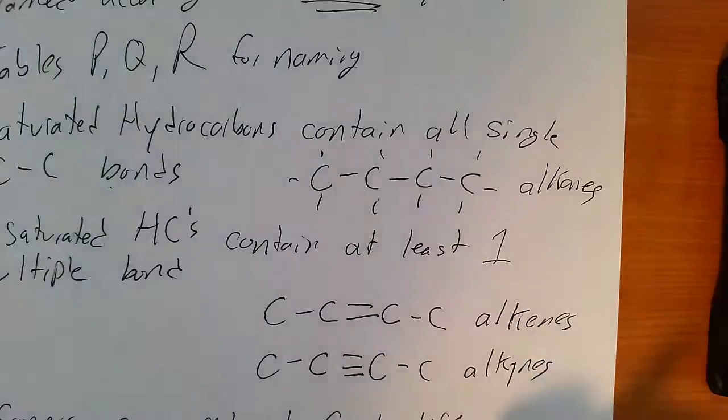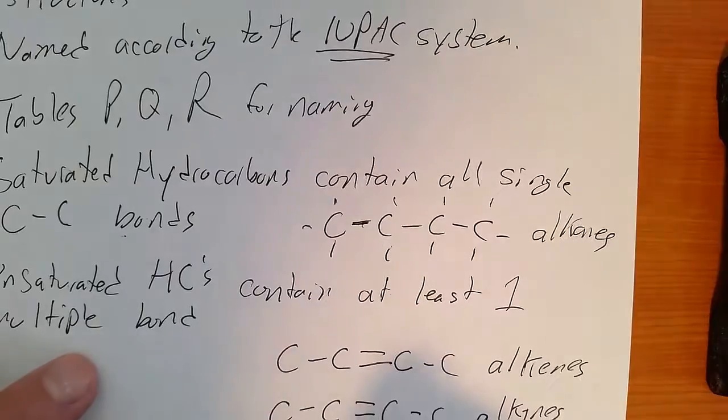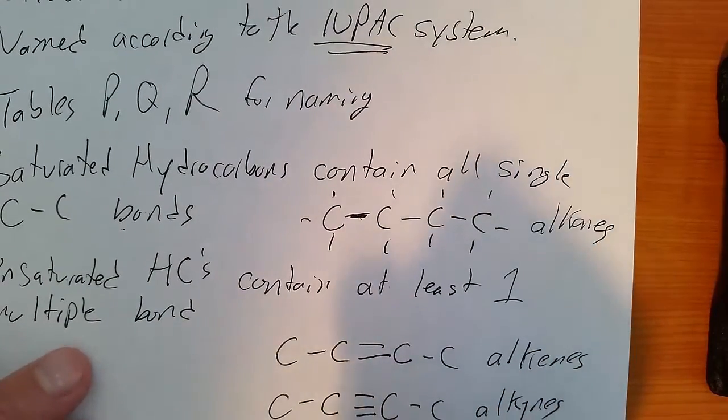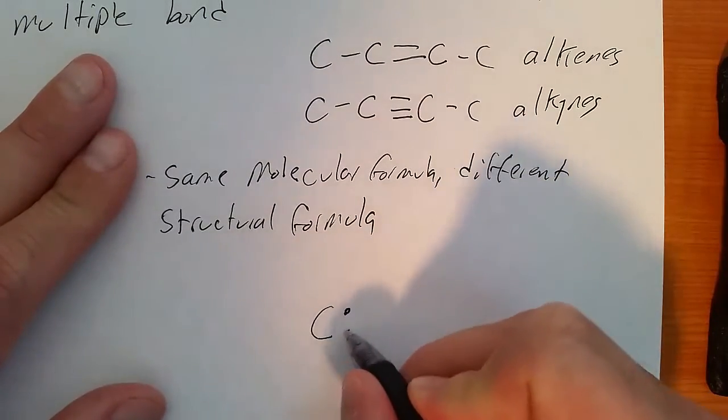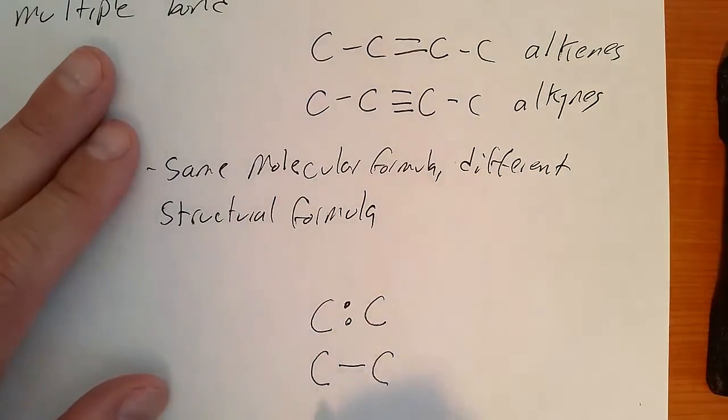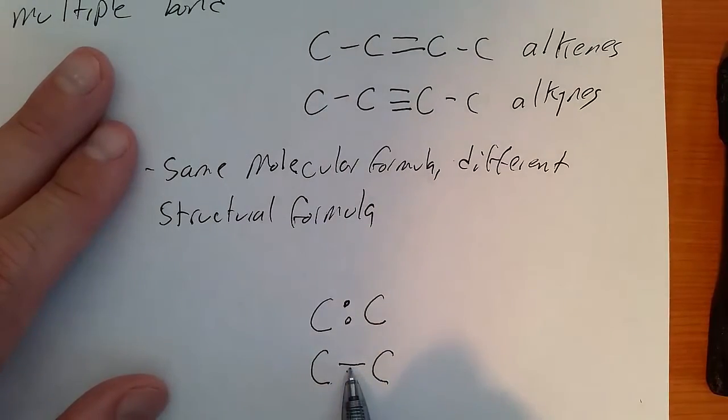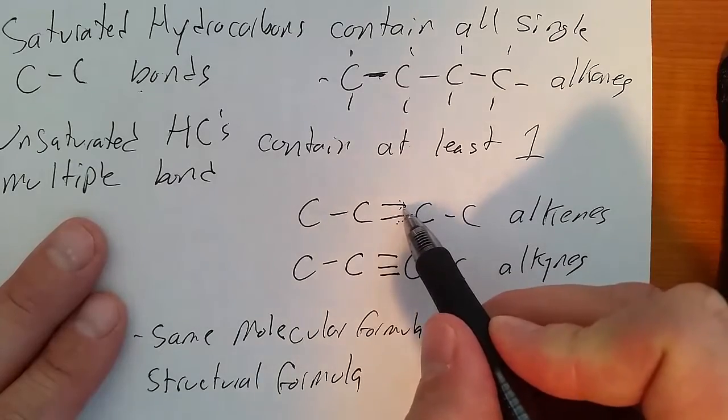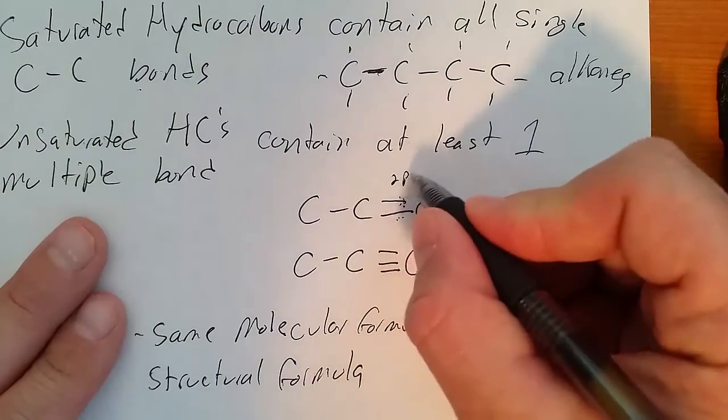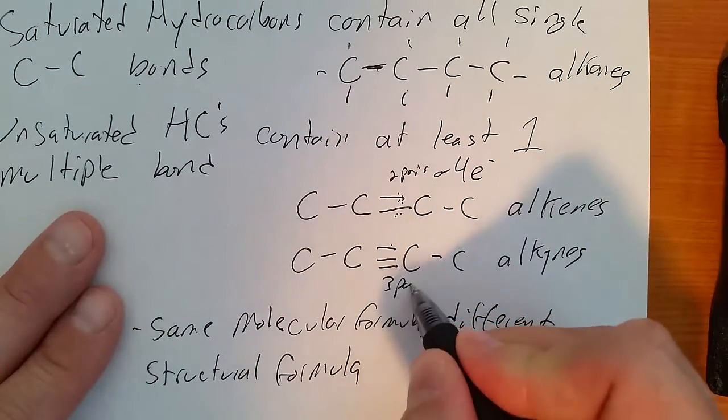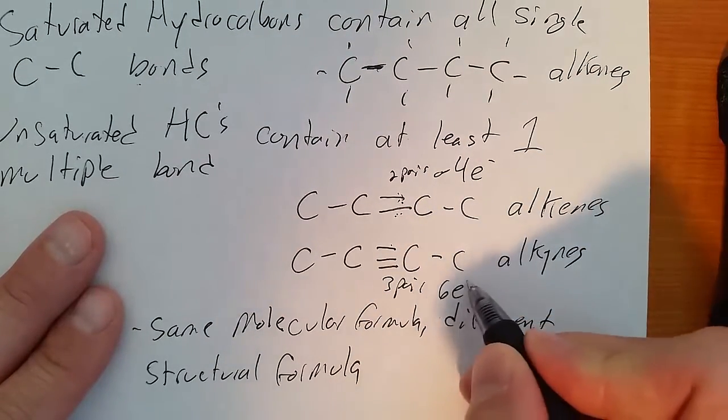All right, just a reminder about bonds. Each one of these lines represents a chemical bond, and the line represents a shared pair of electrons. So if we see this, it's the same as this. One shared pair or two electrons. A double bond, two shared pairs or four electrons. Triple bond, three pair or six electrons.